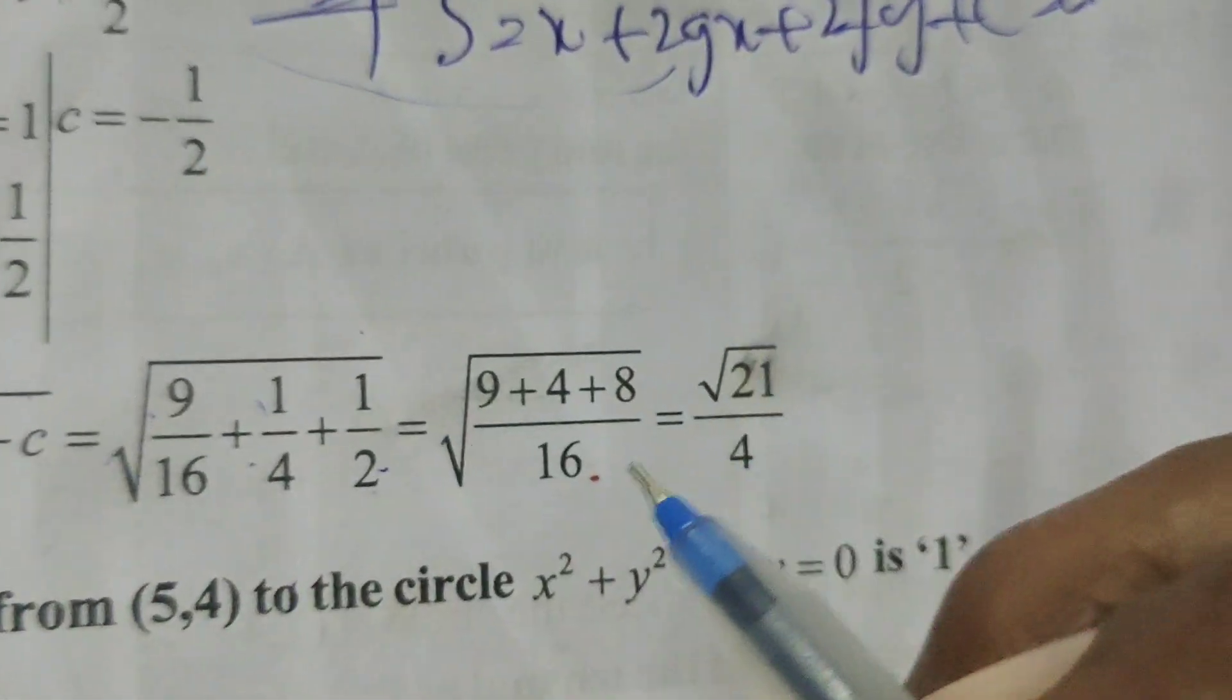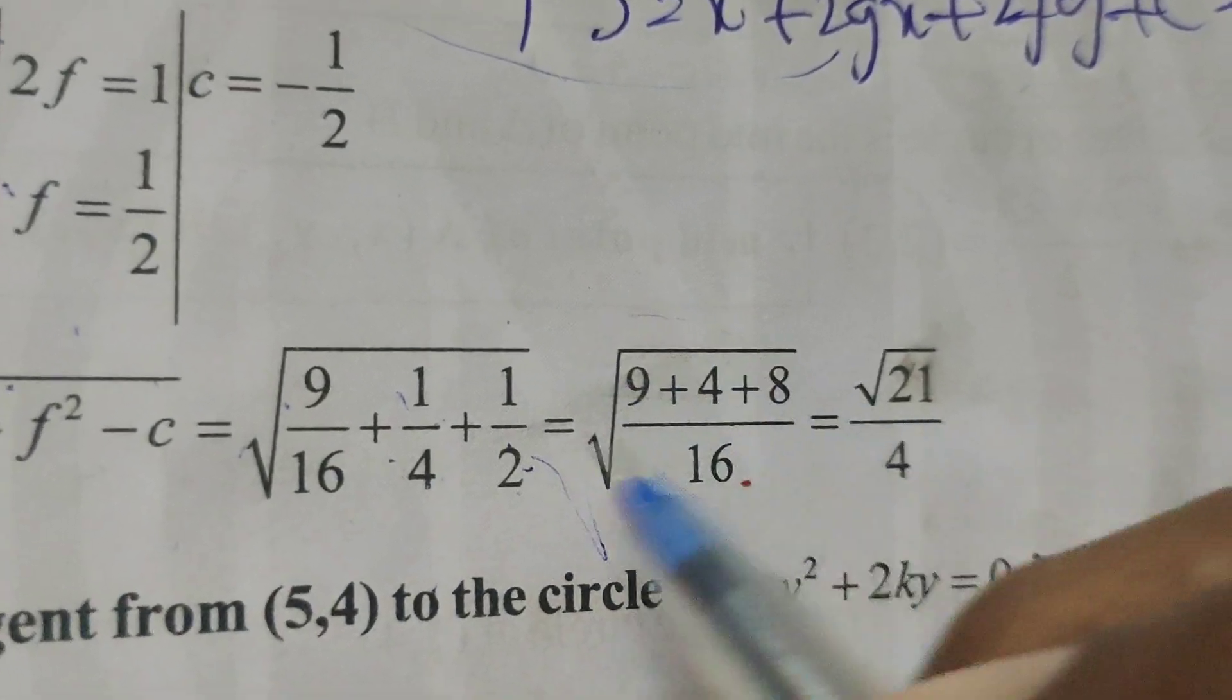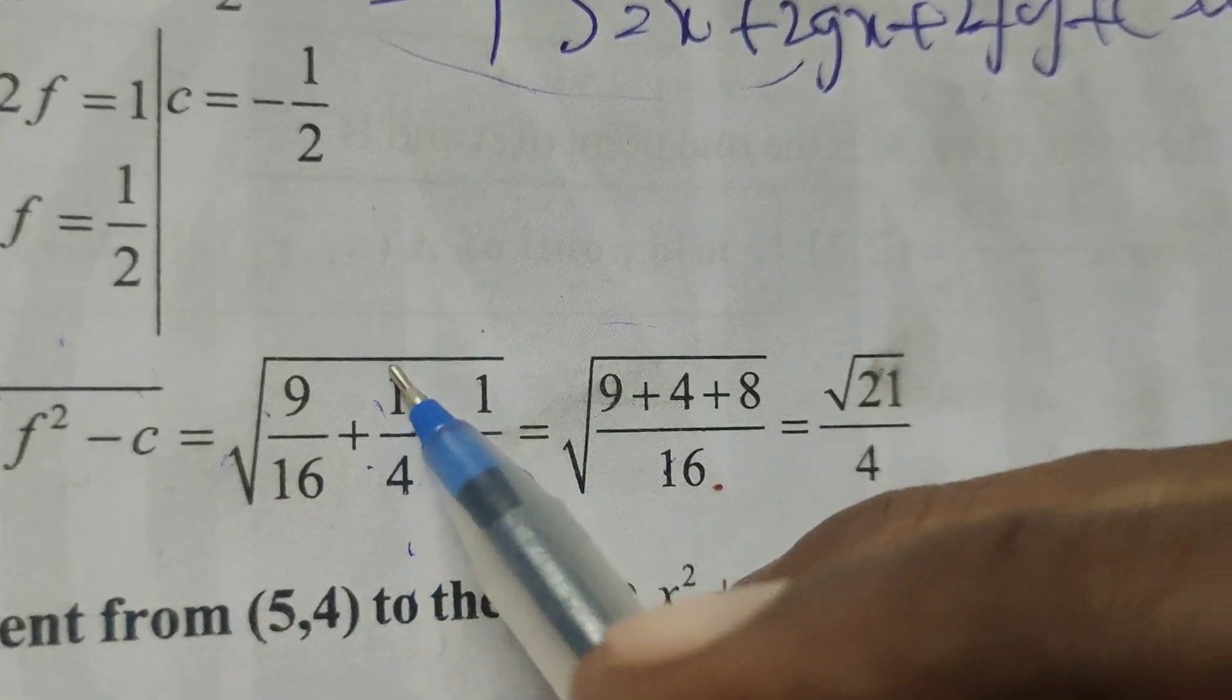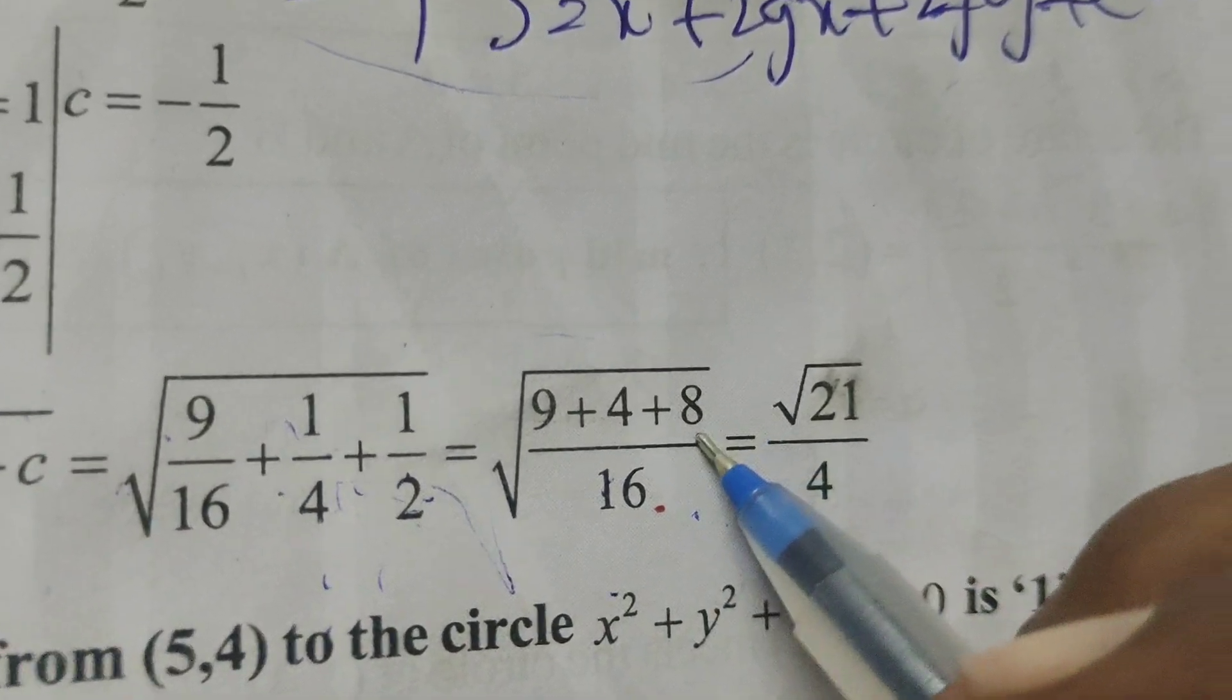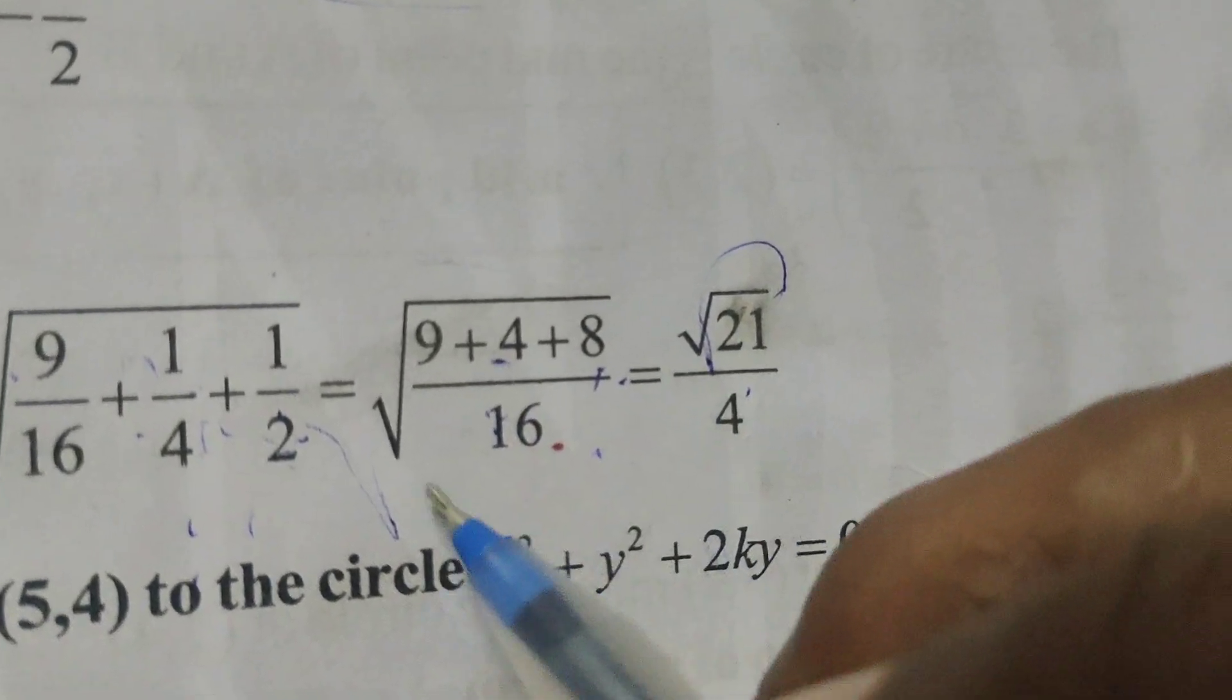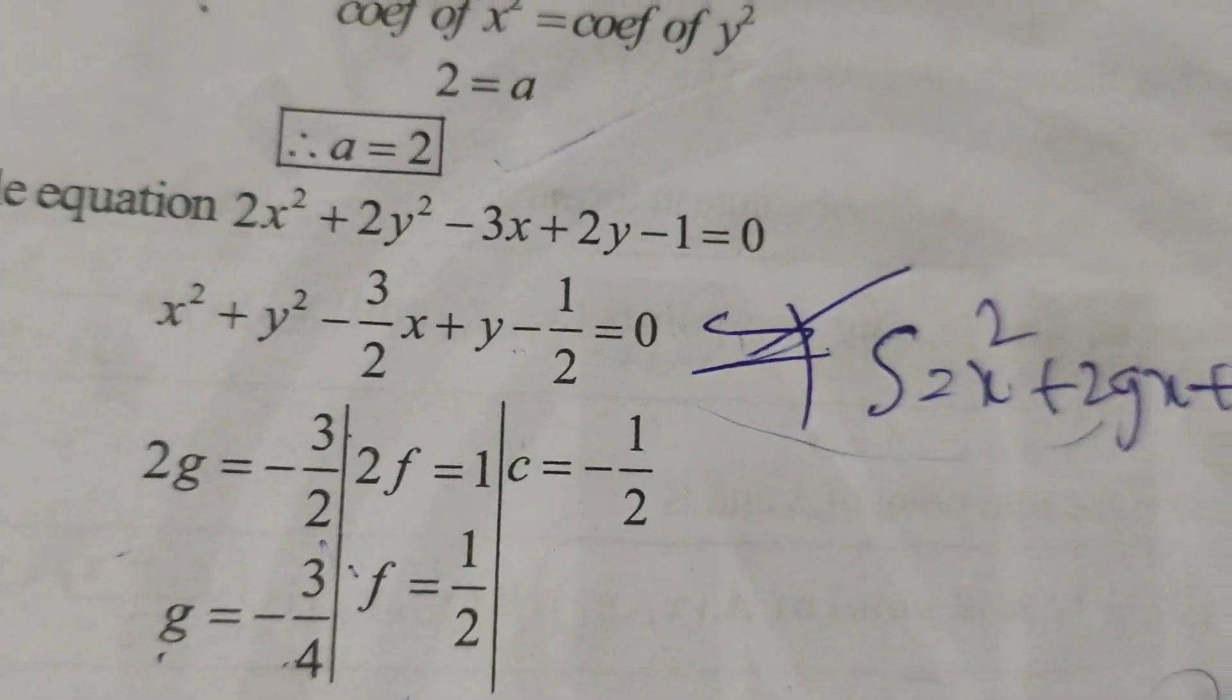Here, minus or minus plus, that is root of, here LCM is 16, here 9 plus 4, 4's are 16, plus 2, 8's are 16, here 8. 13 plus 8 is root 21 by, root 16 is 4, this is r. Okay, thank you.